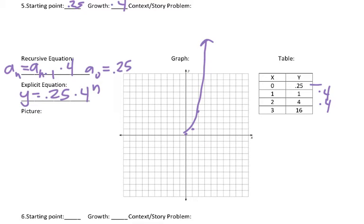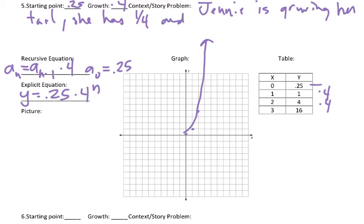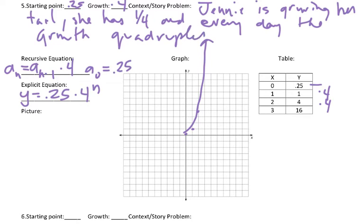Story problem. What could we do for this? We could maybe say Jenny is growing her tail. She has one-fourth. And every day the growth quadruples.